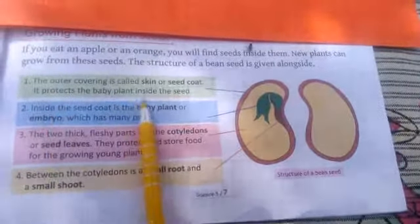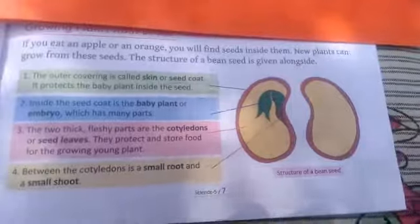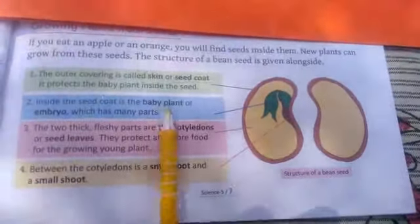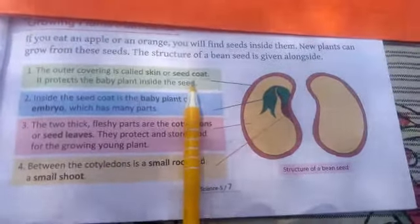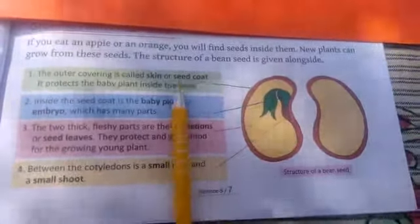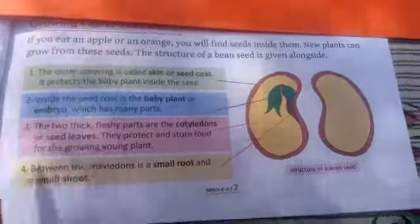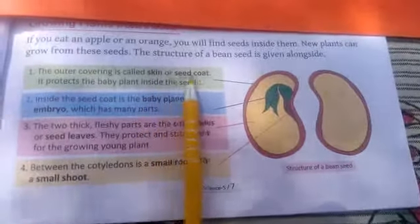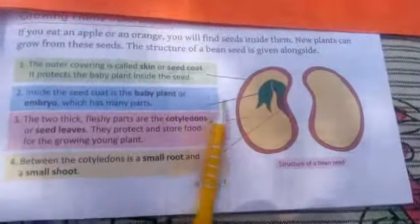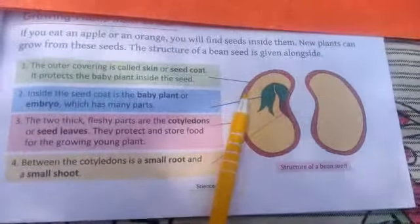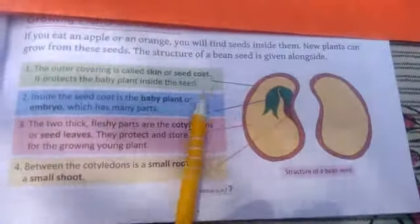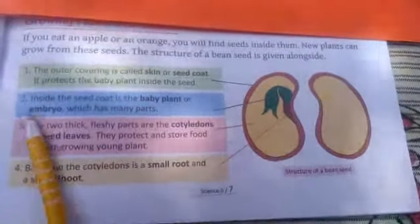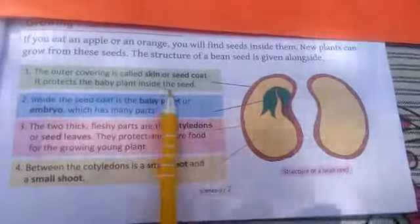First, what is the skin or seed coat? If you look at a particular seed, we can observe the seed coat from the outside. The outer covering is called the skin or seed coat — the outermost layer of the seed is known as the seed coat. The function of the seed coat is that it protects the baby plant inside the seed.